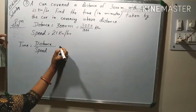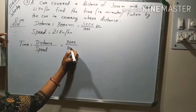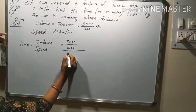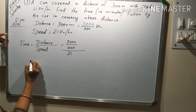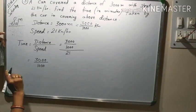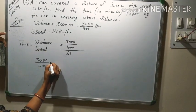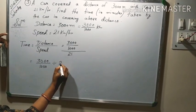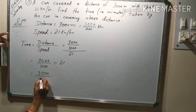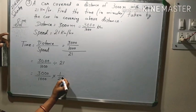Distance is 3000 over 1000, speed is 21. So this becomes 3 over 21. Now as this 21 is after the division sign, so this will be changed into multiplication sign. So it becomes 1 upon 21.